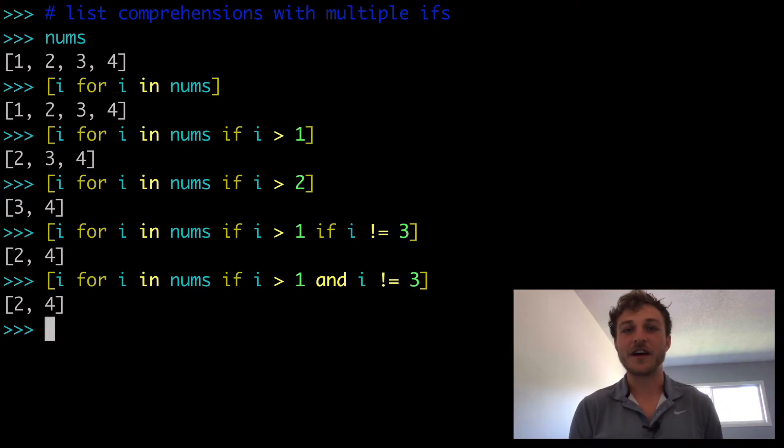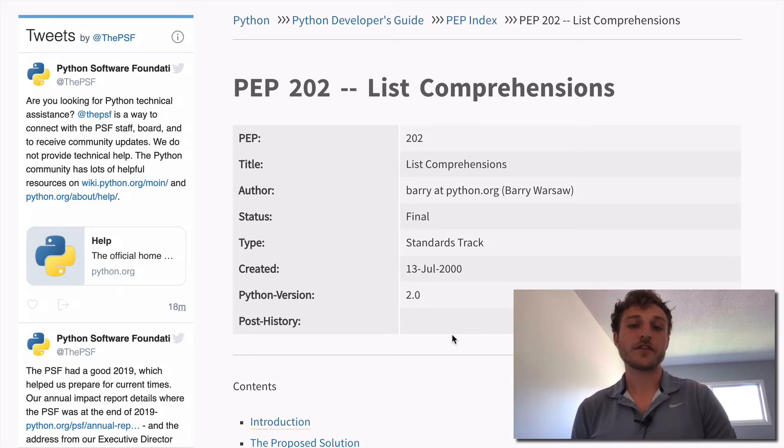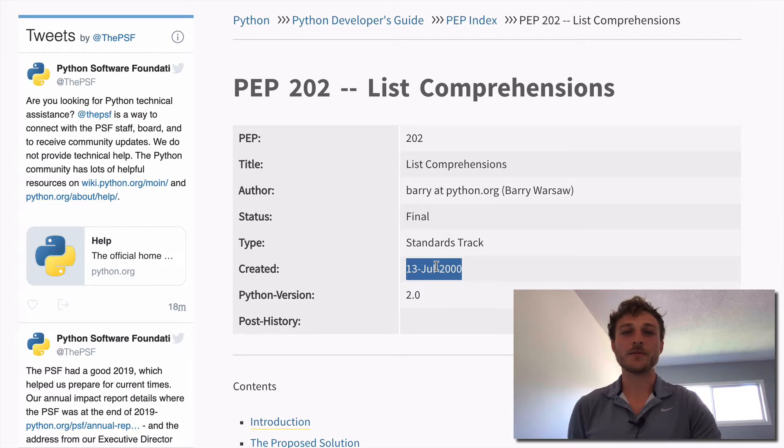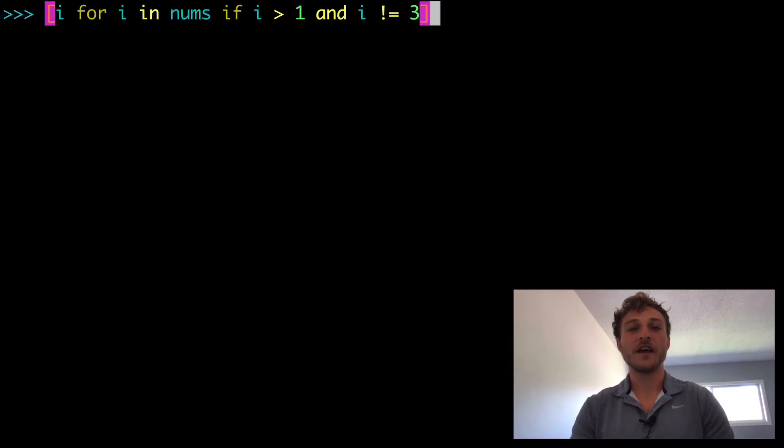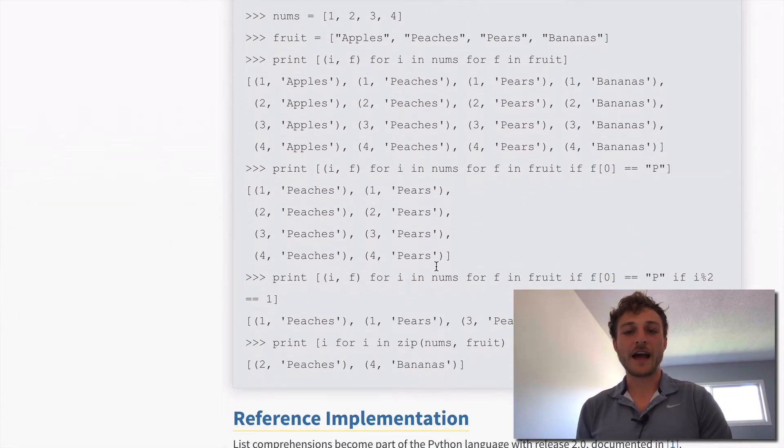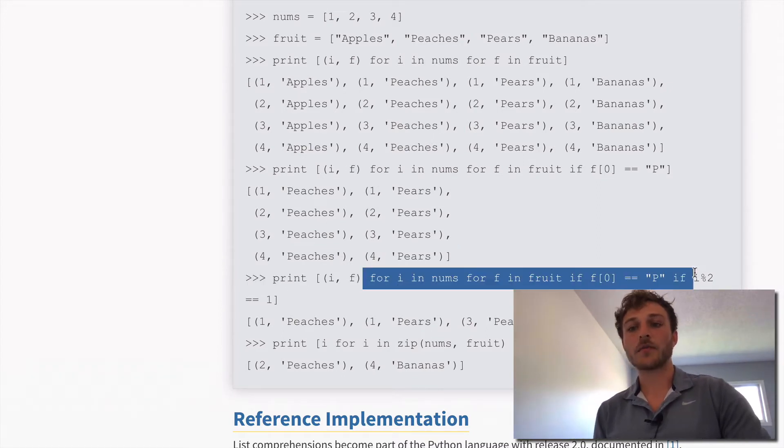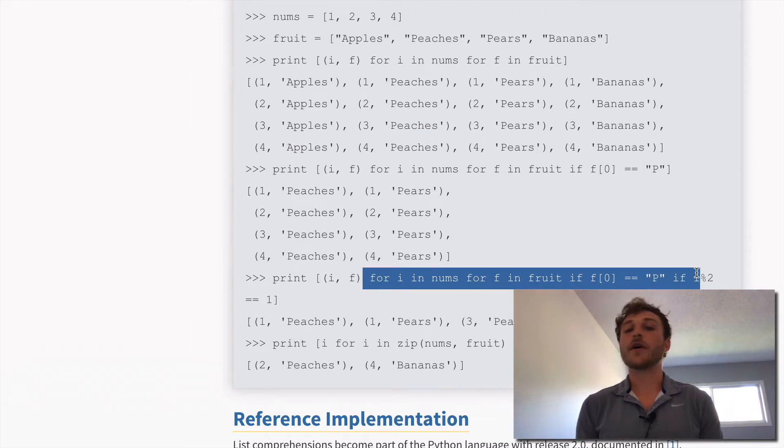Before we get too ahead of ourselves, I wanted to take a step back and show you guys something. So first we're going to look at the documentation of when list comprehensions were first added into the Python language back in the year 2000. So if you're watching this in 2020 when this video was filmed, we've had list comprehensions in the language for 20 years, and people have been doing multiple if statements for 20 years. And even in this pep, in the limited examples they have available, we do even have examples of multiple for loops and multiple if statements in a one-liner.